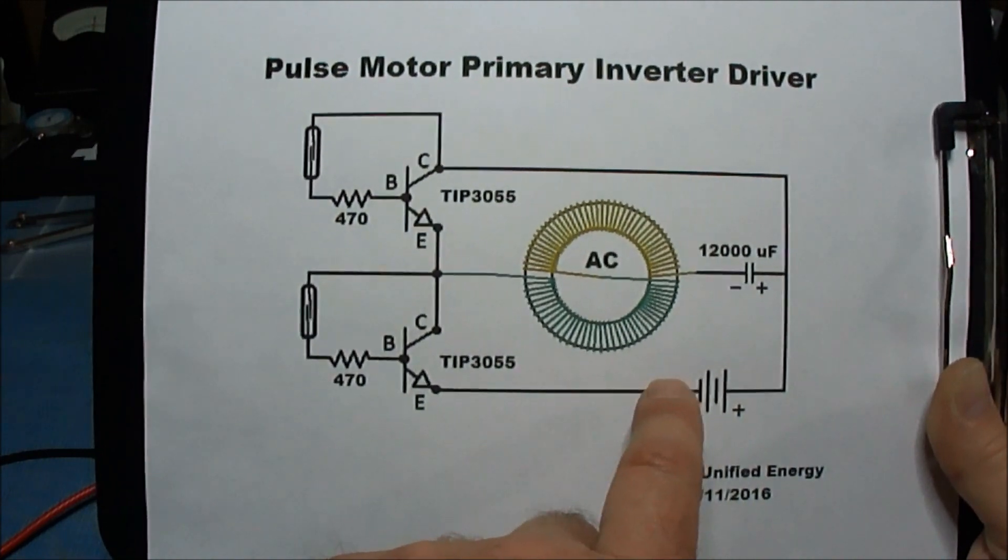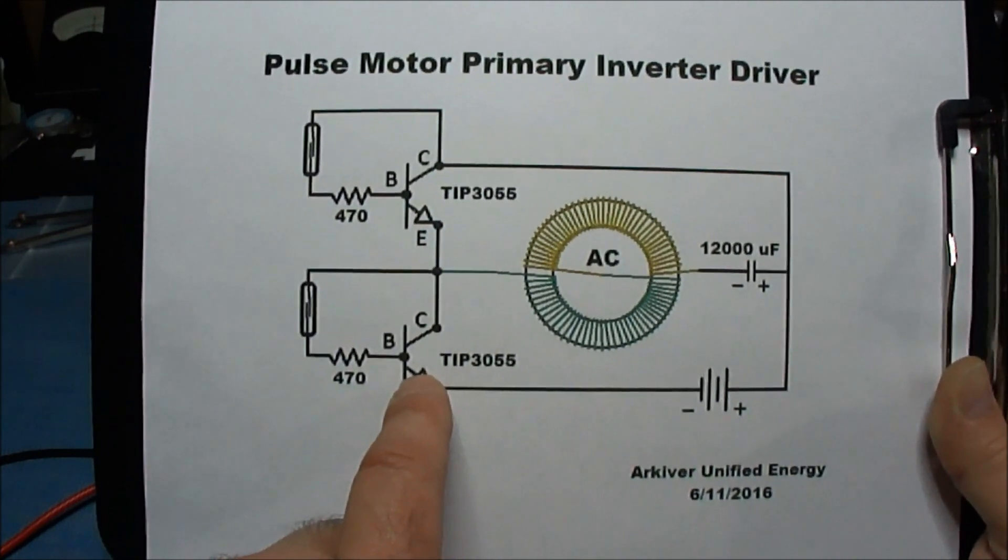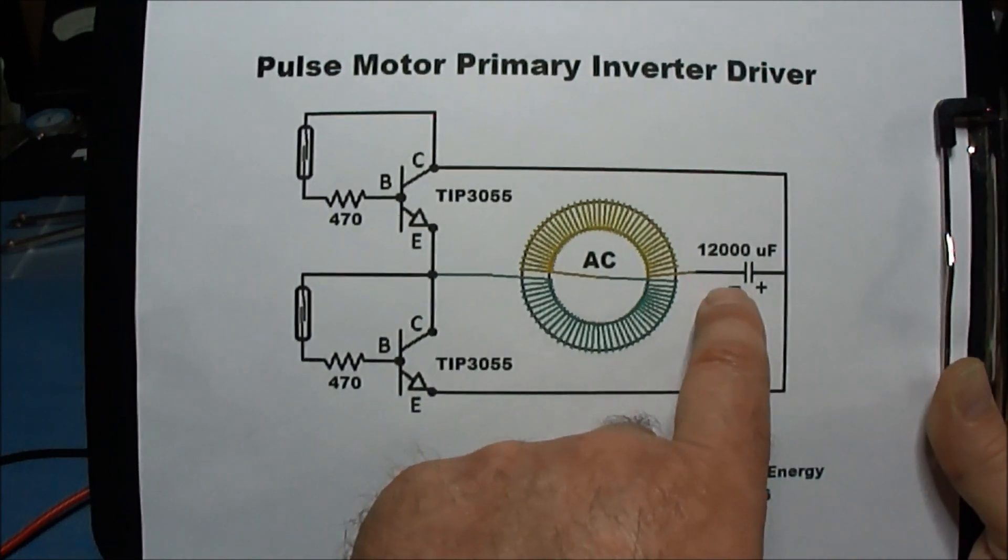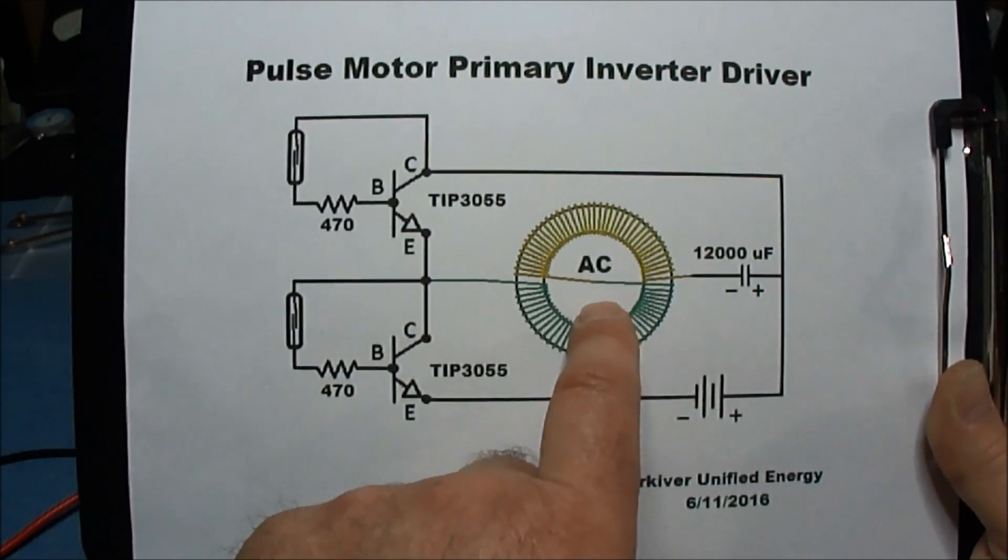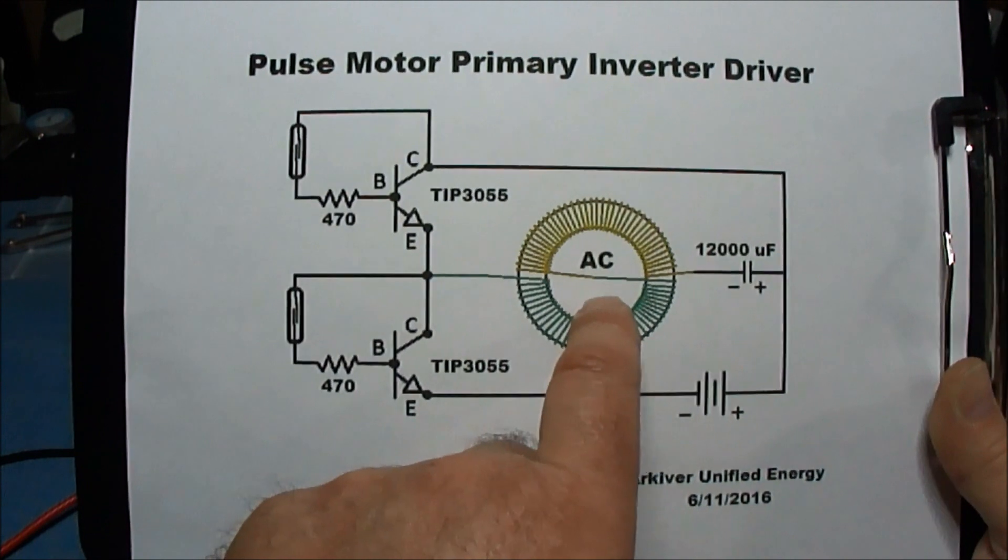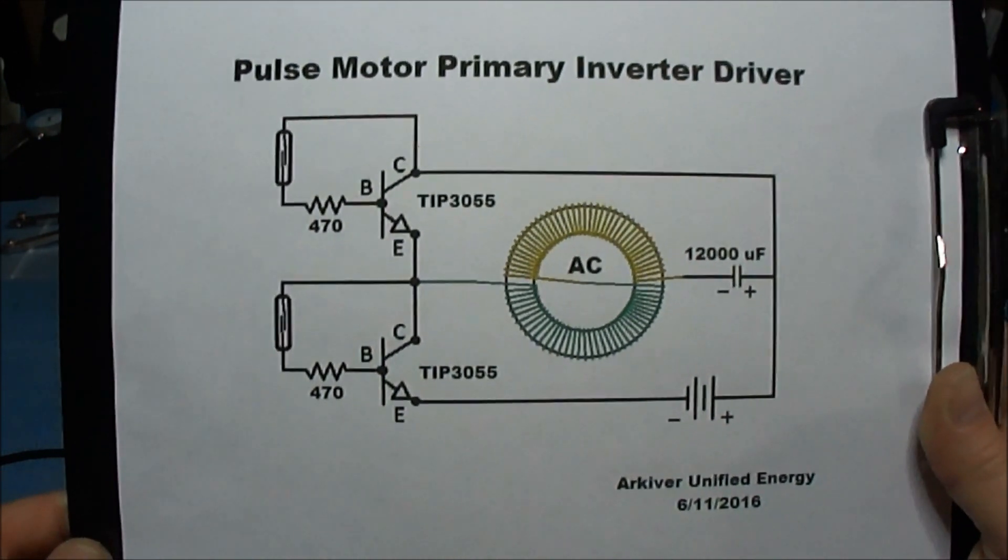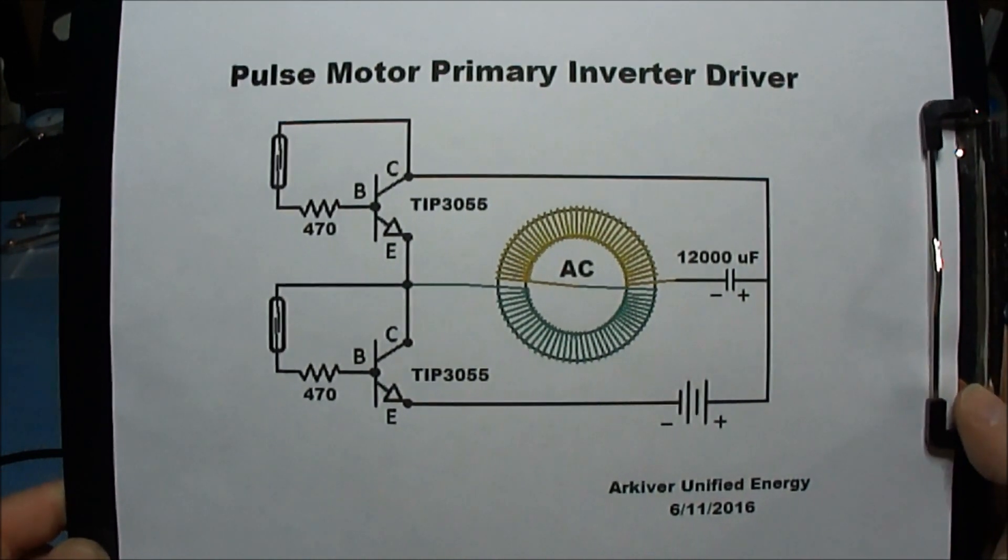When this transistor turns on, the current flows back at the coil in the opposite direction and discharges the cap. So you're basically using the energy from the first pulse a second time in reverse through the coil, giving it an AC current. So you're using the energy twice.